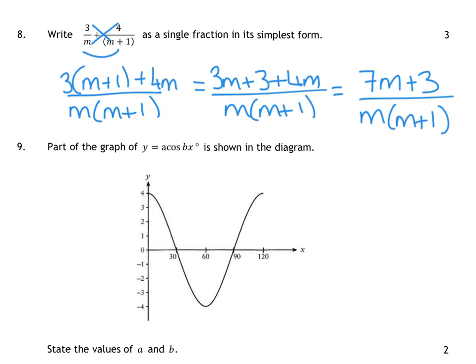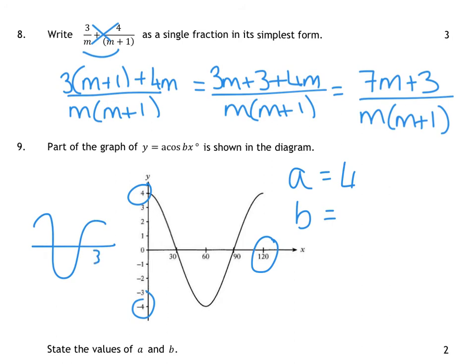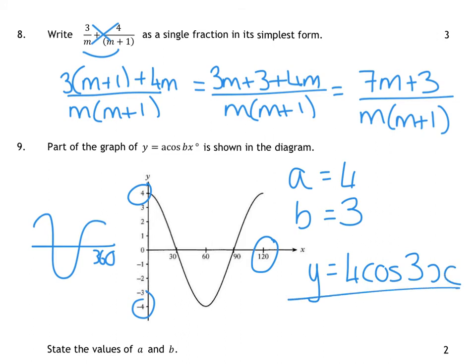Question 9. We have a graph where y equals A cos BX. A is your amplitude — it goes from 4 to minus 4, so A is 4. B is the number of waves between 0 and 360. Your graph finishes at 120; your normal cosine graph finishes at 360. The connection there is that 3 times 120 is 360, so there would be 3 waves, meaning B equals 3. Alternatively, you could just write the equation and get the full marks that way.